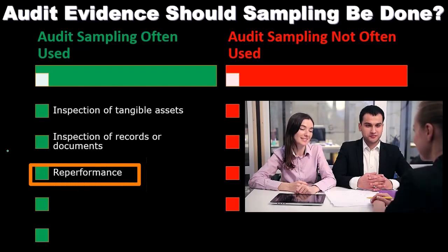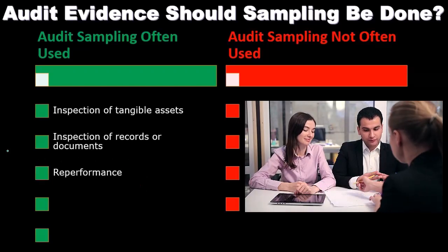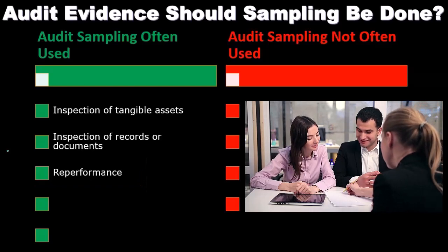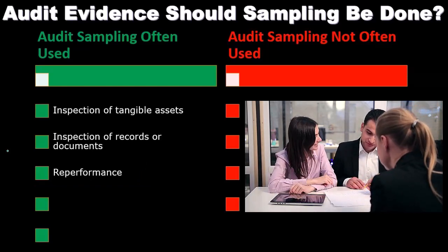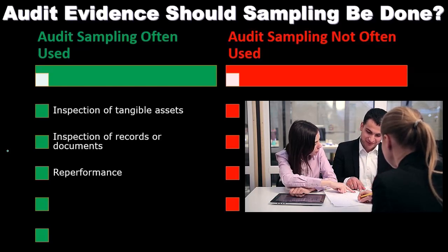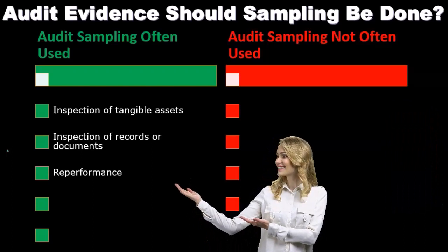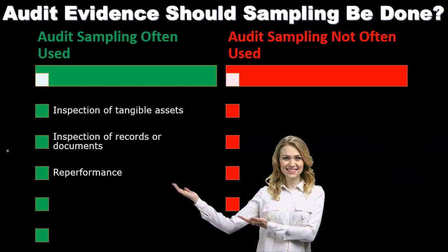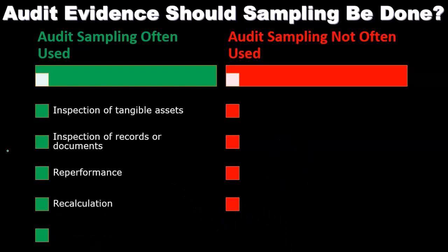Reperformance. If we're going to re-perform something as the auditor, we're going to go through the calculation again for some type of item to see if the calculations are done properly. We're not going to do that for every type of transaction that requires that type of calculation. We will pick some sample of them, re-perform the calculation, see if they're done correctly, and hopefully be able to apply that to the population as a whole.